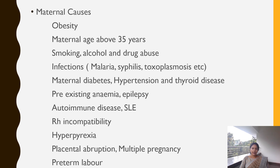Additional maternal causes include severe anemia, epilepsy — which includes eclampsia — autoimmune diseases of the mother such as systemic lupus erythematosus, RH incompatibility, hyperemesis, separation of the placenta, multiple pregnancy, and preterm labor. These are contributing risk factors; it does not mean IUD will occur in all these conditions.